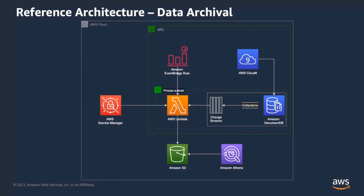At the end of each poll cycle, the function writes the last polled resume token to another collection within the cluster. A resume token is a change stream feature that allows resuming a stream later using the document ID of the last retrieved change event. This token acts as a checkpoint mechanism for the next Lambda invocation to resume polling from where it left off. The Lambda function takes these changes and writes them to S3, including the operation type — insert, update, or delete — along with the document itself.